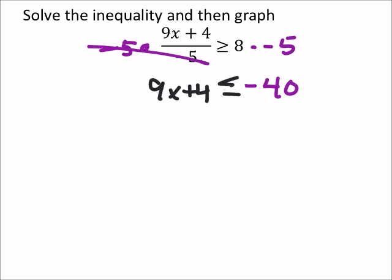Why is that? Because you're multiplying by negative. We multiplied both sides by that negative 5.